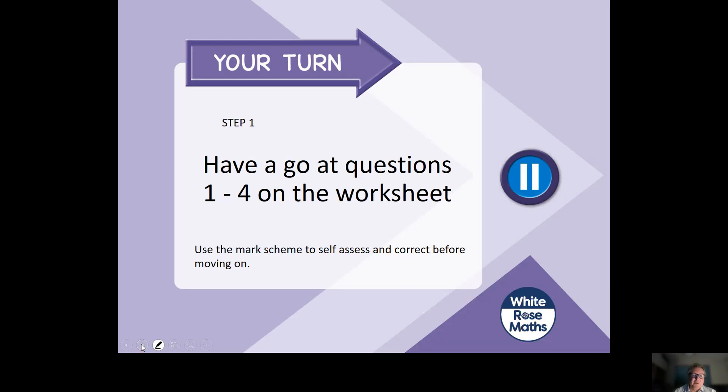Let's take some time to sort of think that through, puzzle it out, talk to your study buddy. So step one, if you have a go at questions one to four on the worksheet, please remember to use the marking station to self-assess and correct before moving on. You want to make sure that you're doing this correct. If you're not doing it correct, sometimes once you've seen the answers, you can work backwards. If you have the answers wrong and you don't know why, that's the time to let me know. If you ask a specific question, I can give you a specific answer.